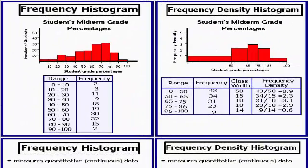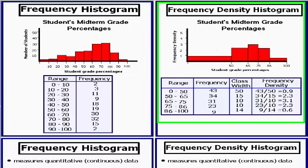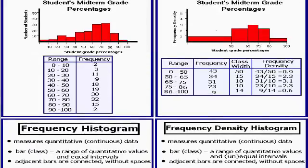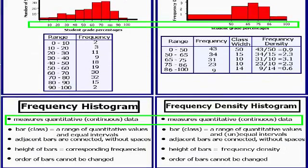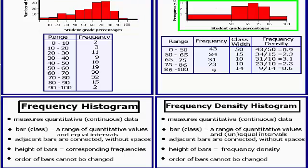Here I have an image of a frequency histogram, a frequency density histogram, and its corresponding frequency table. In each case, we are still measuring quantitative data that is continuous. However, what you will notice is that in the case of the frequency histogram, the bars or classes consist of a range of quantitative data values that are equally spaced out — that is not the case for the frequency density histogram. You can see that the bars are unequally spaced out.